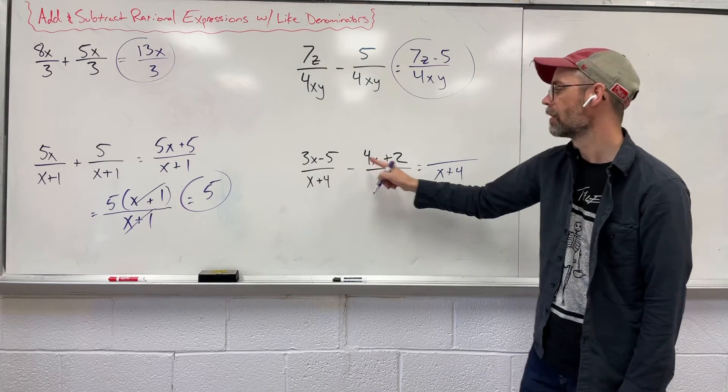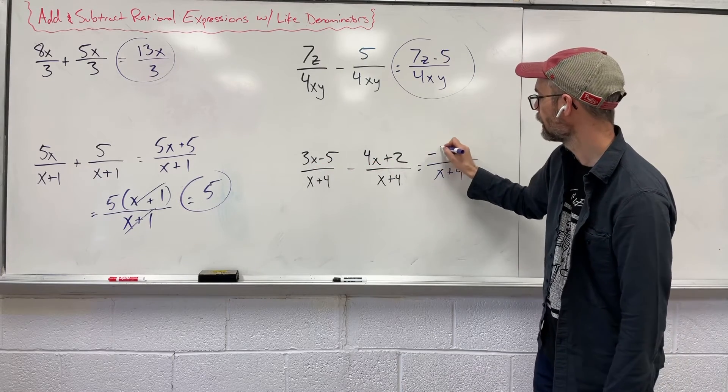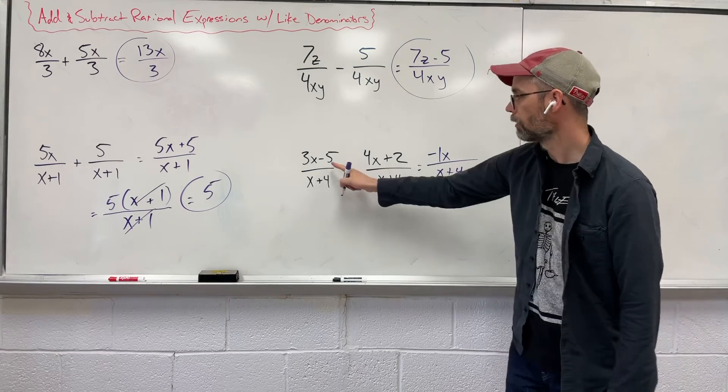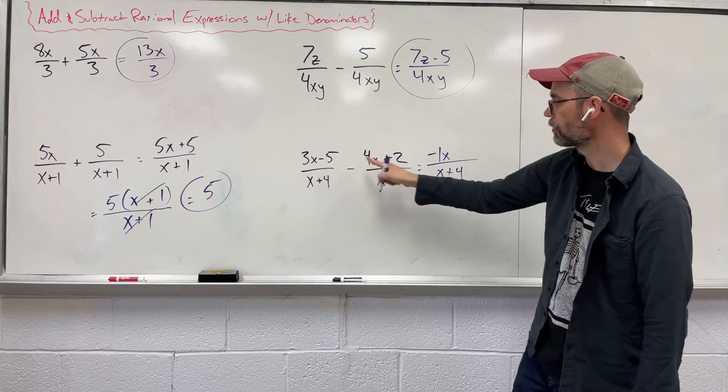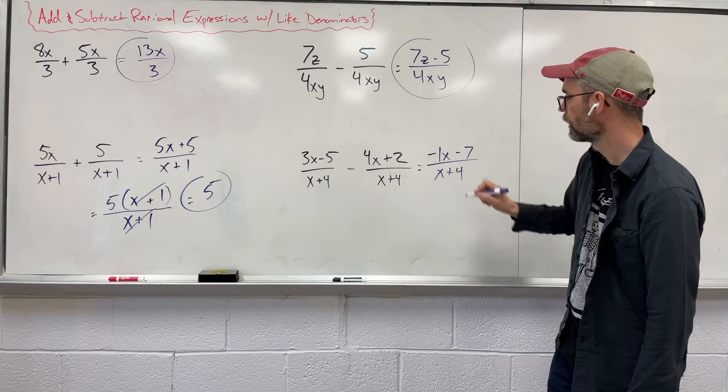So I want to combine 3x and the 4x by subtracting. So I'm going to say 3x minus 4x, giving us negative 1x. I'm going to say negative 5 minus 2, giving us negative 7.